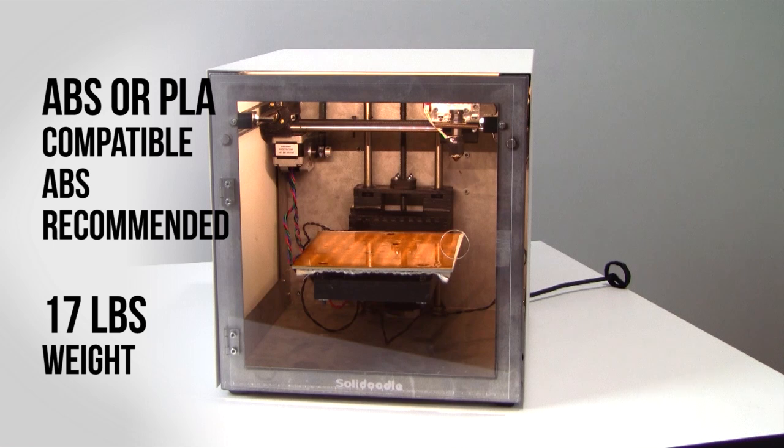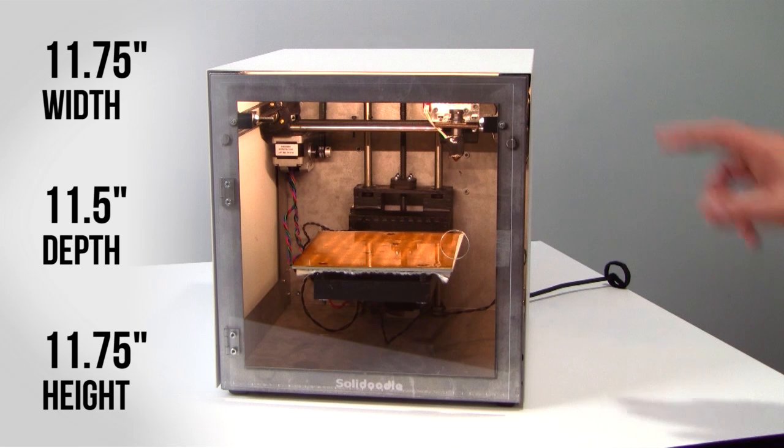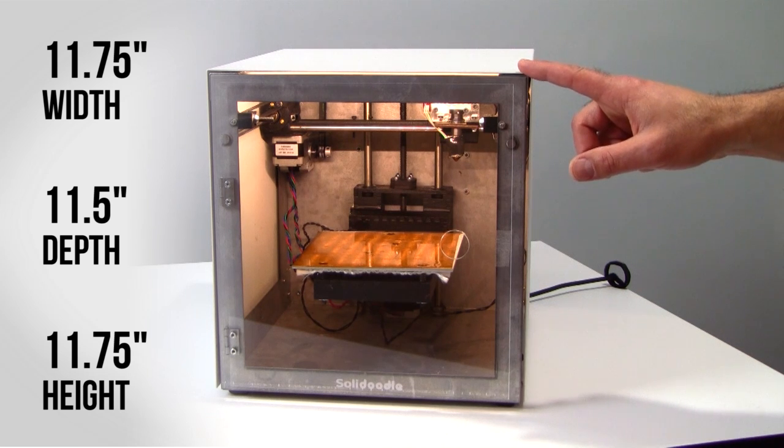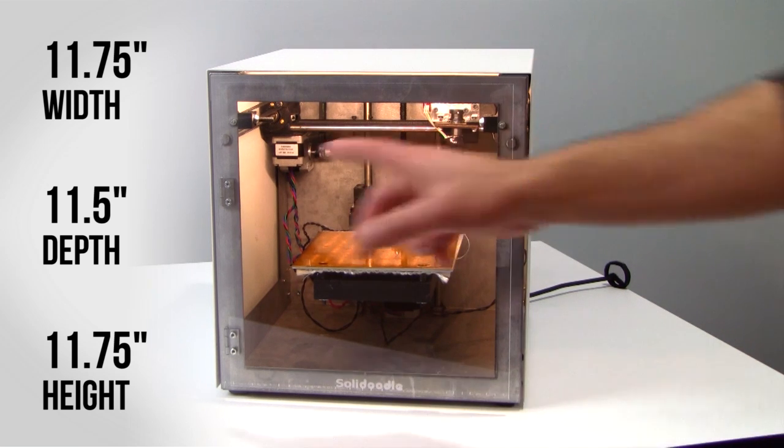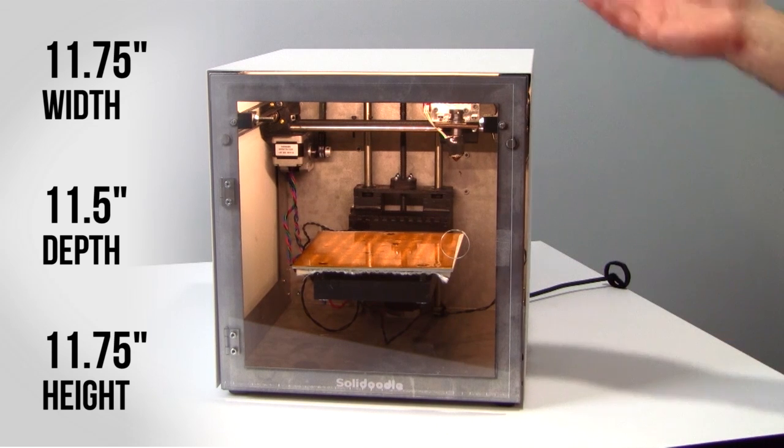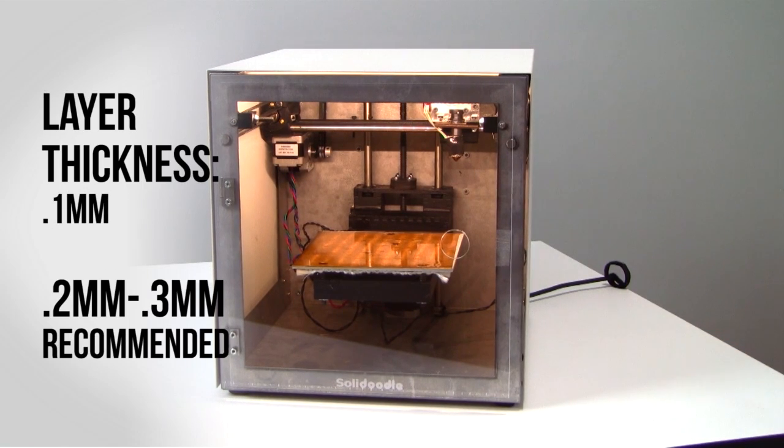All Solidoodles are fused filament-based printers that work with either ABS or PLA, although ABS is recommended. Solidoodle 2 has a RepRap version 1.3a electronics engine as well as a single nichochrome-powered extruder and weighs about 17 pounds. The system is 11.5 inches long by 11.75 inches wide and 11.75 inches high. In terms of precision, the Solidoodle 2 can print down to 0.1 millimeter layer heights, with 0.3 millimeters suggested for typical printing. As always, the finer the build pitch, generally the slower your prints will go.